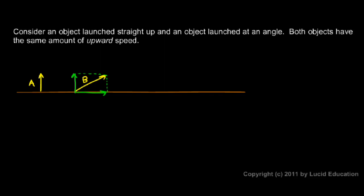The horizontal part is completely independent of the vertical part. If we were to watch these objects sail through the air, object B would go up some, and then gravity would slow it, and it would come back down. And object A would also go up, and gravity would slow it, and it would come back down.